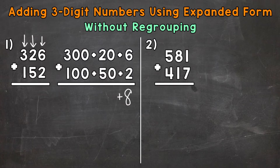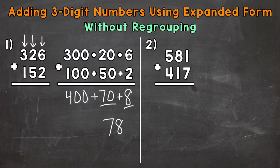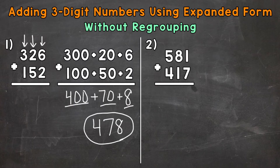Bring our addition sign down and work our way to the left — so we have the tens place next. 20 plus 50 is going to give us 70. Bring our addition sign down. And then we have 300 plus 100, which gives us 400. Now that we have that, we can put it together for our final answer: an eight in the ones place, a seven in the tens place, and a four in the hundreds place. So 400 plus 70 plus eight gives us an answer of 478.